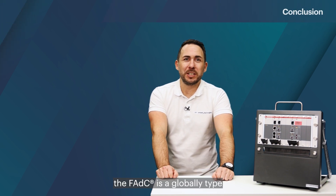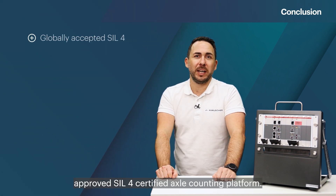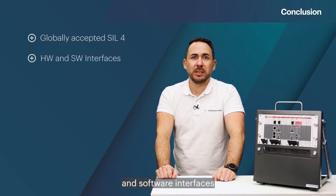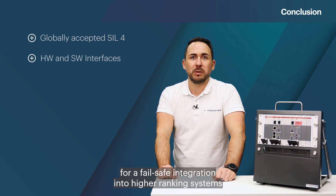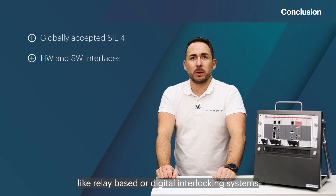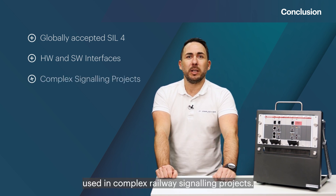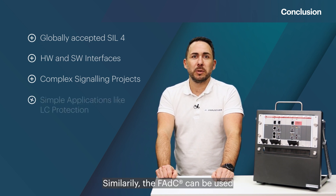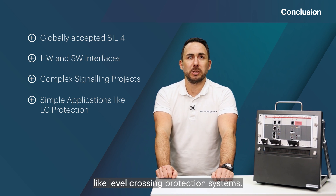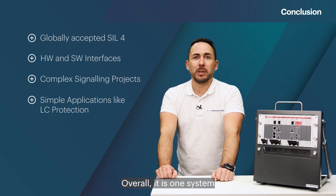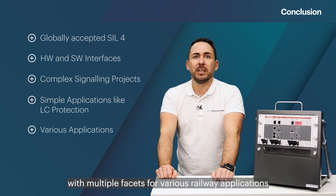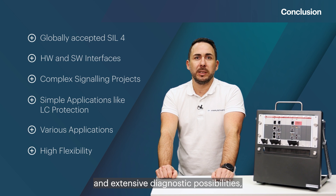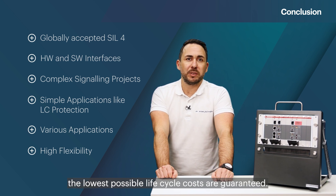In conclusion, the FADC is a globally type approved SIL-4 certified Axle Counting platform. It provides hardware and software interfaces for a failsafe integration into higher ranking systems like relay based or digital interlocking systems. Used in complex railway signaling projects, similarly the FADC can be used in simpler railway applications like level crossing protection systems. Overall, it is one system with multiple facets for various railway applications and due to its flexibility and extensive diagnostic possibilities, the lowest possible lifecycle costs are guaranteed.